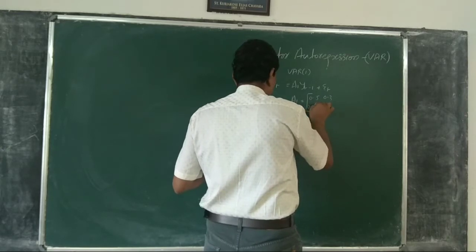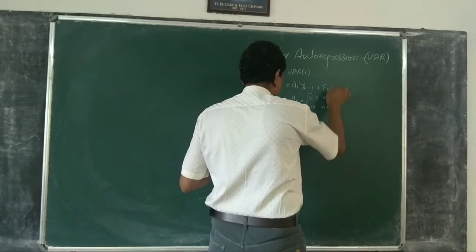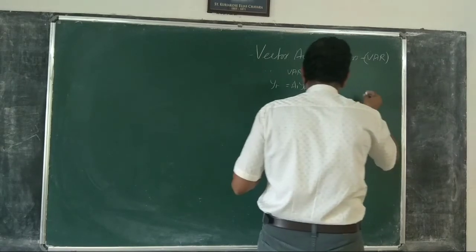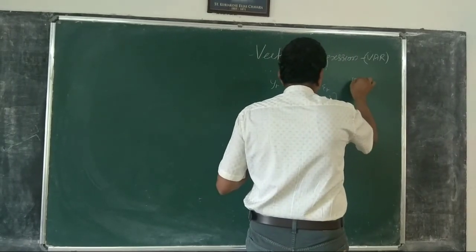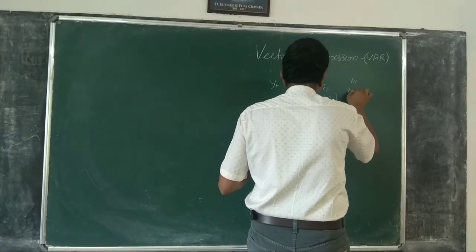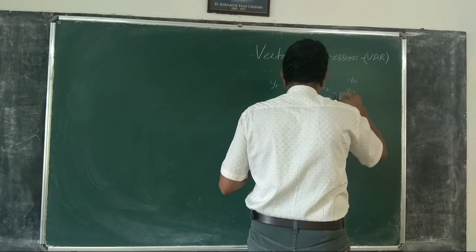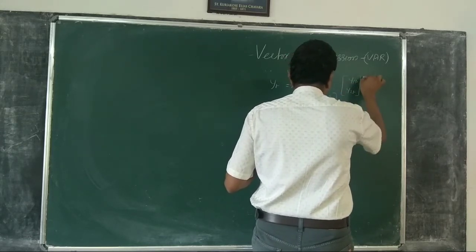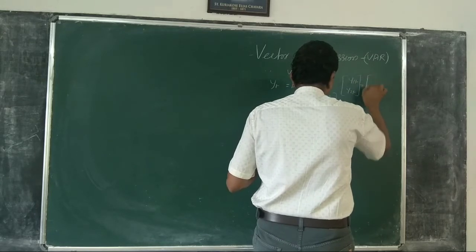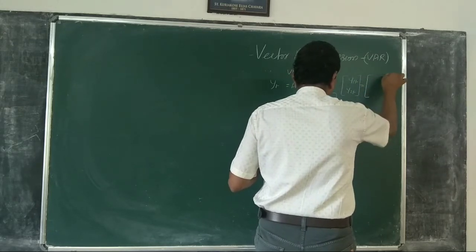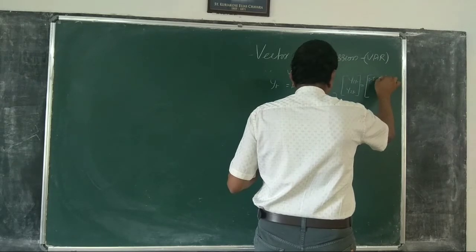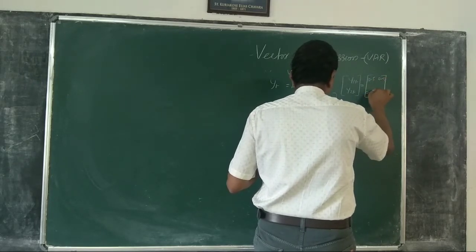And a1 is the matrix with values 0.5, 0.3 in the first row and 0.0, 0.2 in the second row. This model has two variables y1t and y2t, with one lag of y1 and one lag of y2.